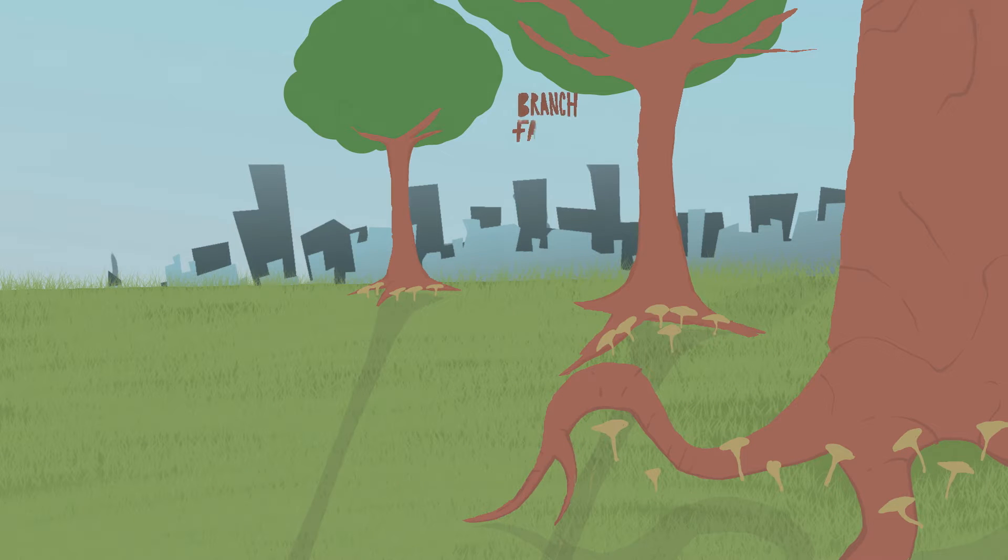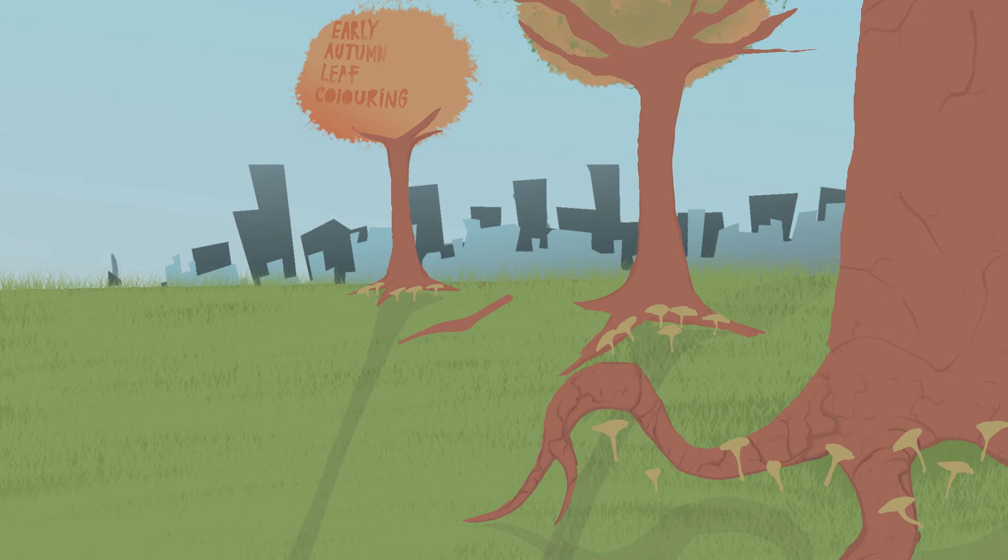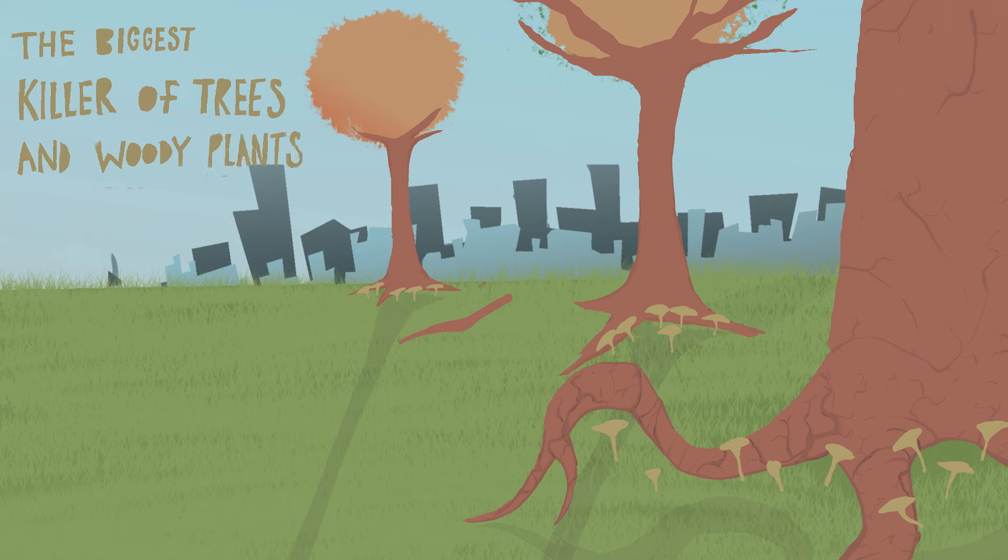Root decay, branch failure, early autumn leaf coloring—it could be honey fungus, the biggest killer of trees and woody plants in the UK.